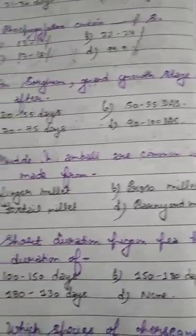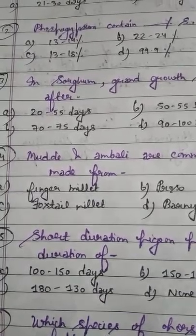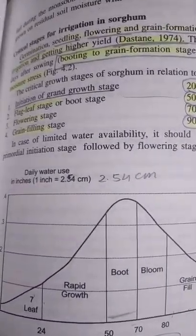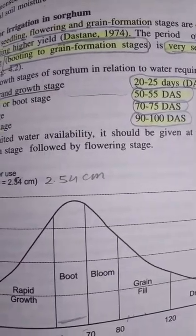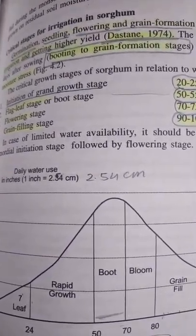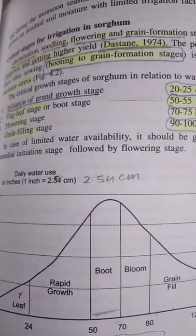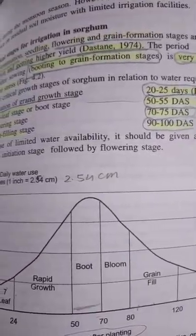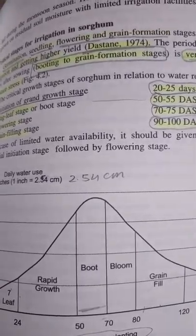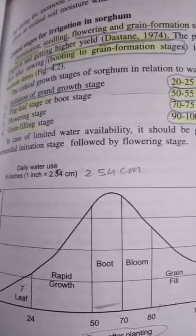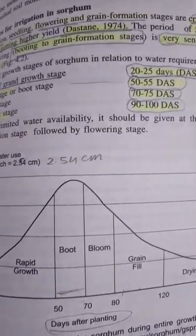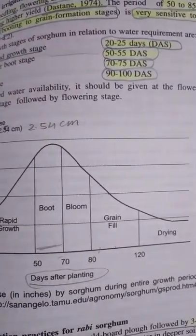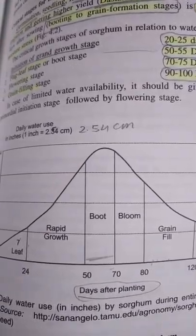Question number 3: in sorghum, the grand growth stage comes after how many days? There are 4 critical stages of sorghum in relation to water requirement or irrigation: grand growth stage at 20 days after sowing, flag leaf or boot stage at 50 days after sowing, flowering stage at 70 days after sowing, and grain filling stage at roughly 90 to 100 days after sowing — a gap of roughly 20 days between each stage. This flow chart of days after planting goes: leaf, rapid growth, boot, bloom, grain fill, and drying. This chart is not important unless you are writing a descriptive answer.